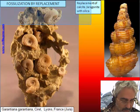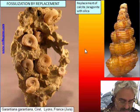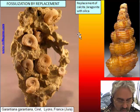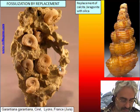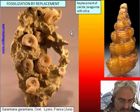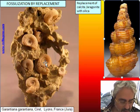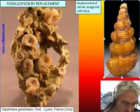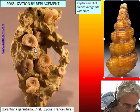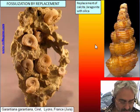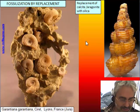Another example of replacement is when an organism has a shell made usually of aragonite and is completely replaced by silica. In this case, like this ammonite or this gastropod, you can see the outer cast but also some internal details are preserved, because all the calcite or aragonite is replaced by silica.